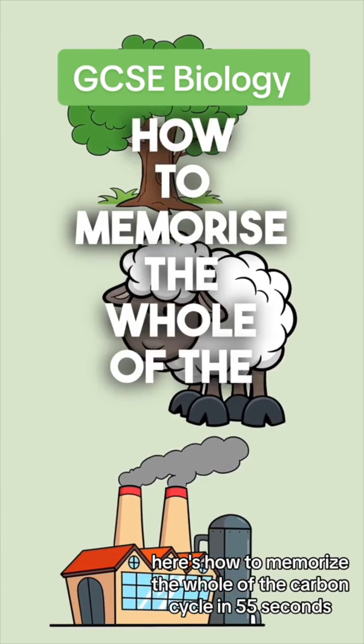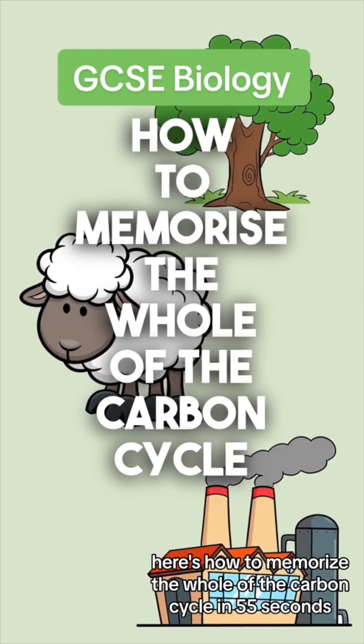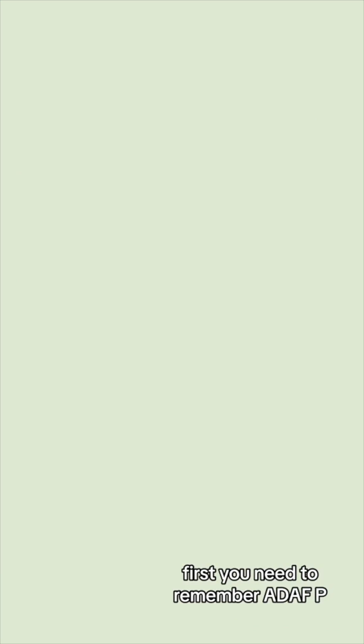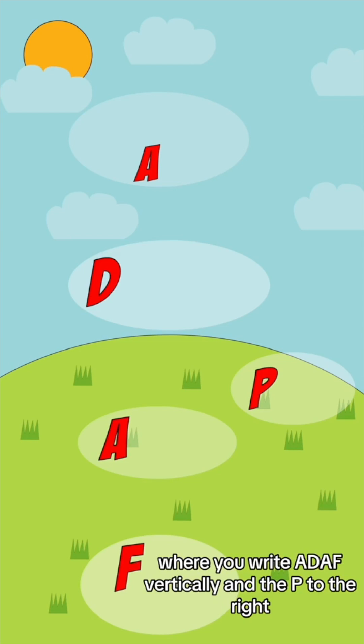Here's how to memorize the whole of the carbon cycle in 55 seconds. First you need to remember ADAPH P, where you write ADAPH vertically and the P to the right.